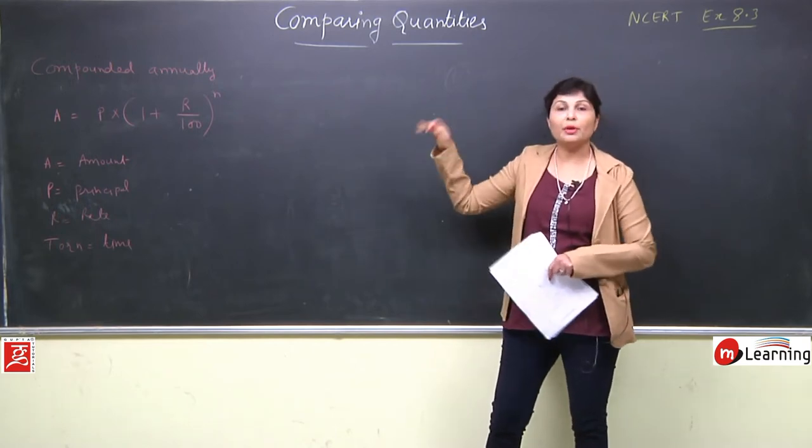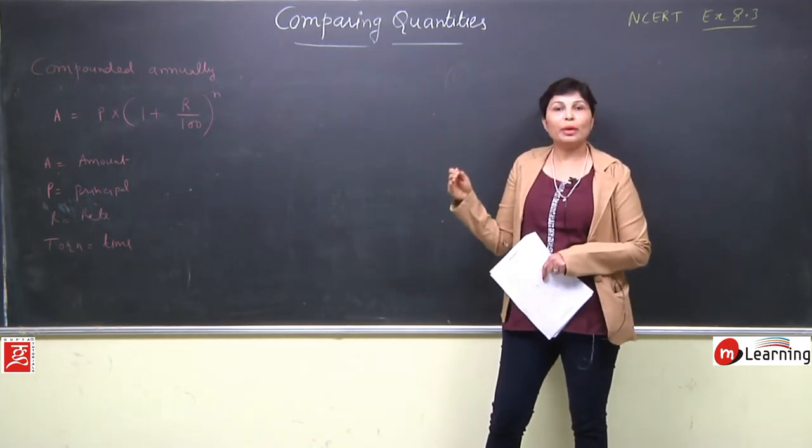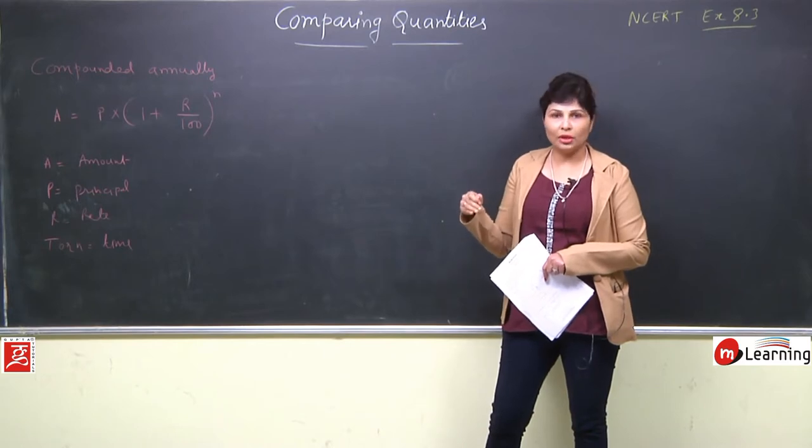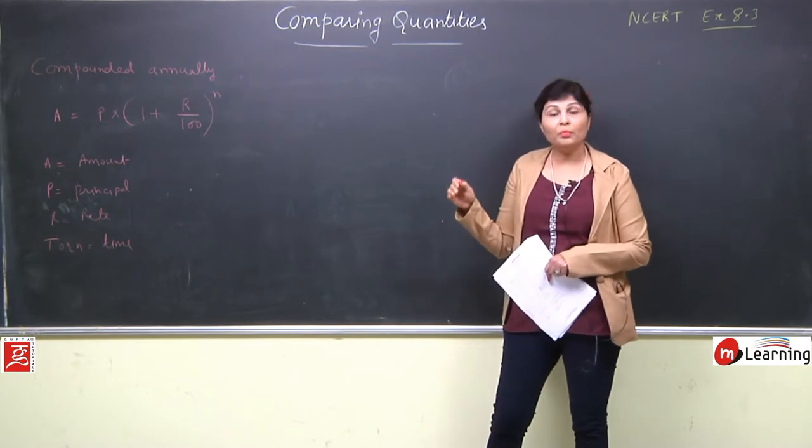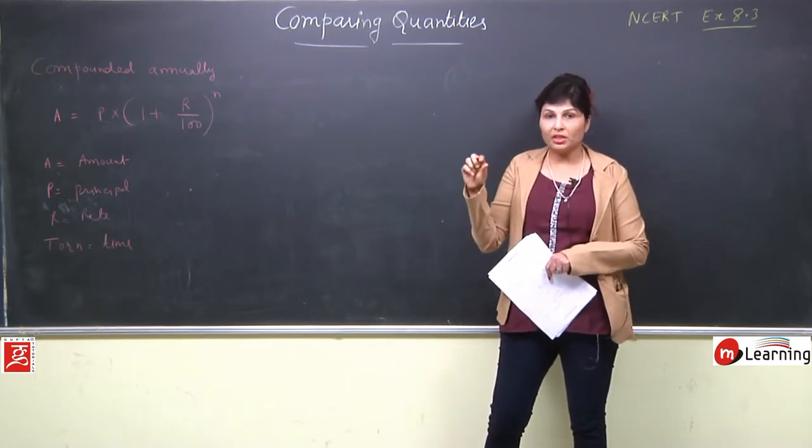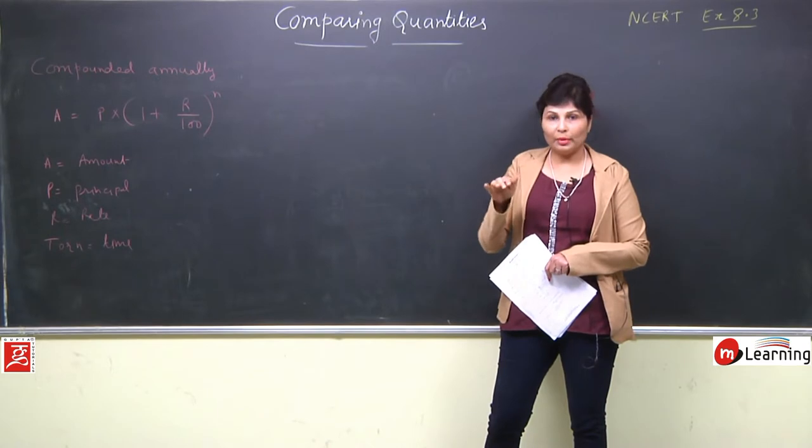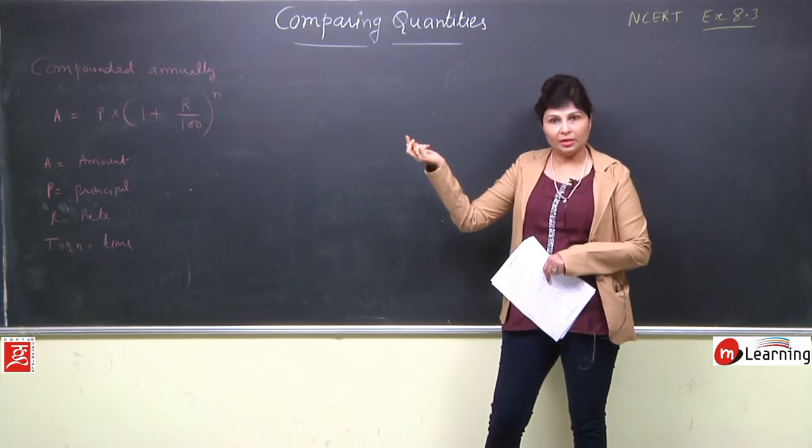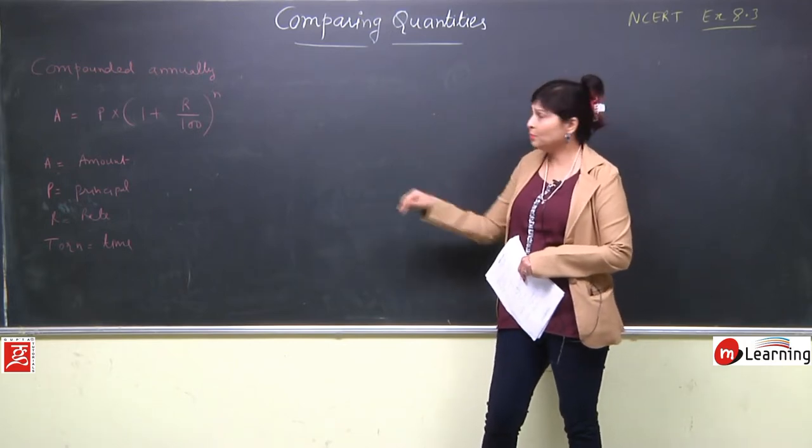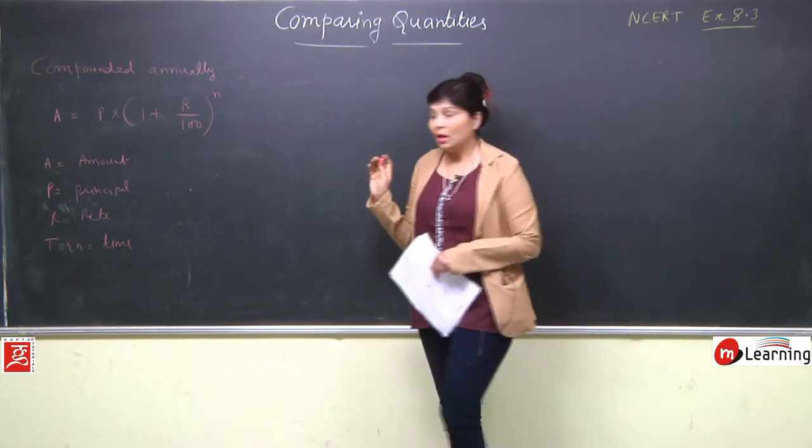Why did this formula come? Earlier, before this formula, we used to solve through simple interest, but compounding annually through simple interest took too much time. We had to calculate first year's simple interest, add it to principal to get amount, which would become the principal of the second year. The concept was very complicated, so this formula came.